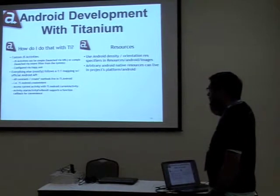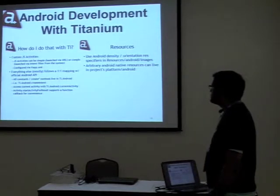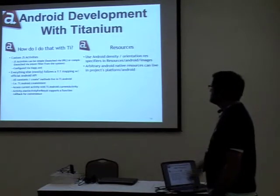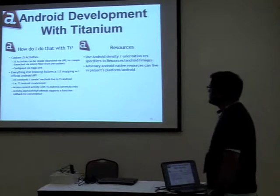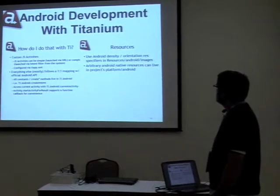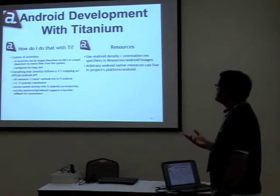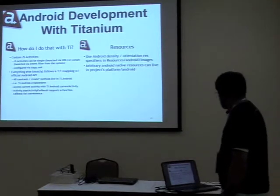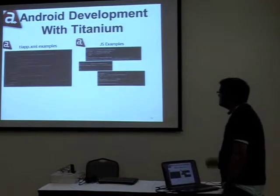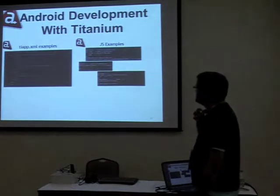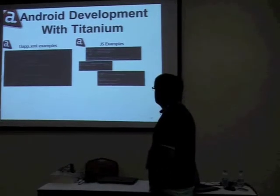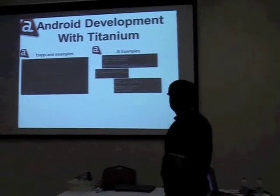Most Android-specific stuff resides in a package called TI.Android. To create an intent you call TI.Android.createIntent. To access your current activity it's TI.Android.currentActivity. For callbacks you can call activity.startActivityForResult. Just like in native development you'd place images in a resources folder, Titanium also has a counterpart resources folder. Titanium's version of the manifest file is how you create an activity and an intent.